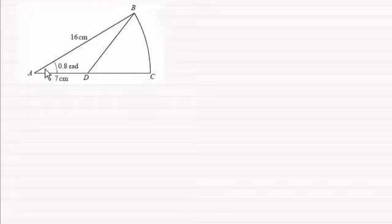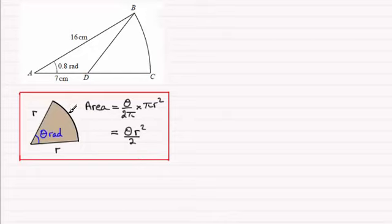So starting off with the area of the sector, I'm assuming that you're familiar with the area of a sector. Just briefly, the area of a sector is the angle compared with 2π. Remember we're working in radians, so it's a fraction of the area of a complete circle, π r².